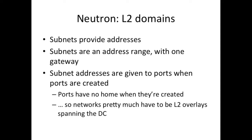Subnets, talking about those layer two domains, are fundamentally layer two domains and they don't work any other way. Subnets provide addresses out of a pool, and they define the addressing scope of a network — one address range with one gateway. So you consistently end up with a layer two domain. Subnet addresses are given to ports when they're created, which means you can't address a port based on where that port happens to be within your cloud. Because port addresses can be anywhere, the layer two overlay has to span the entire data center — it may be wiring up two virtual machines in opposite corners.